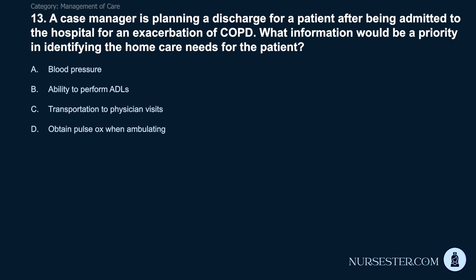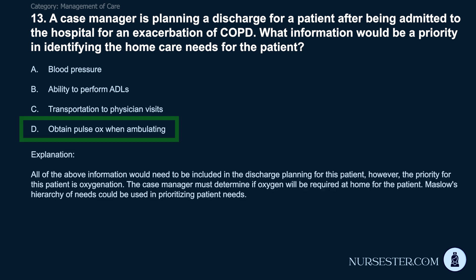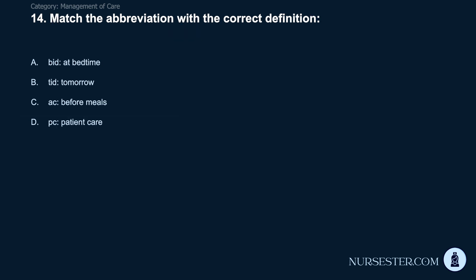Question 13: A case manager is planning discharge for a patient admitted for an exacerbation of COPD. What information is the priority in identifying home care needs? A) Blood pressure. B) Ability to perform ADLs. C) Transportation to physician visits. D) Obtain pulse ox when ambulating. Correct answer: D. Obtain pulse ox when ambulating. The priority for this patient is oxygenation. The case manager must determine if oxygen will be required at home. Maslow's hierarchy of needs can be used in prioritizing patient needs.